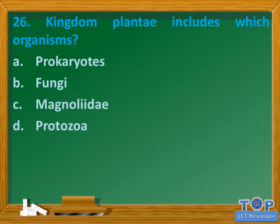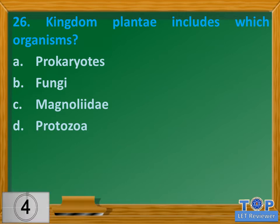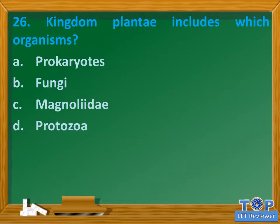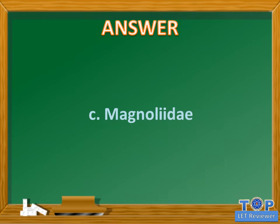Question number 26. Kingdom Plantae includes which organisms? A. Prokaryotes. B. Fungi. C. Magnoliidae. D. Protozoa. Answer: C. Magnoliidae.